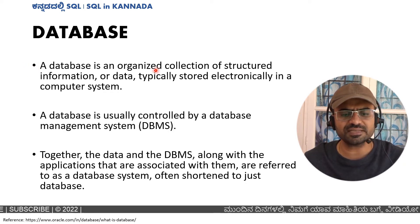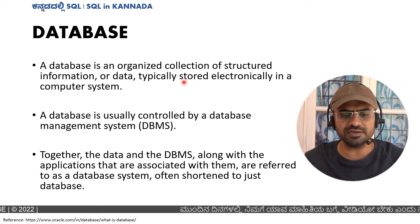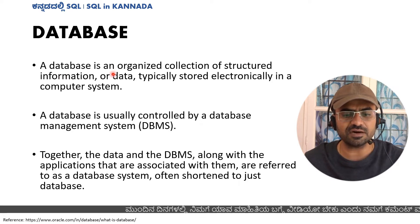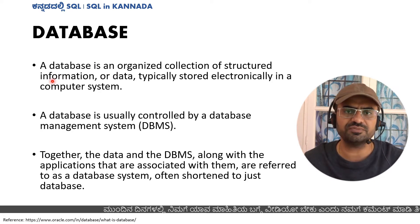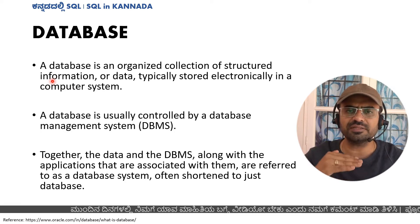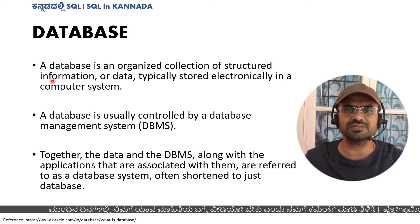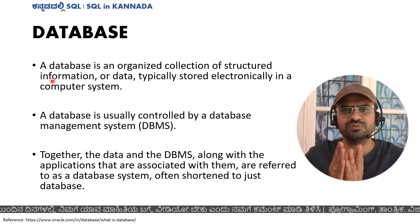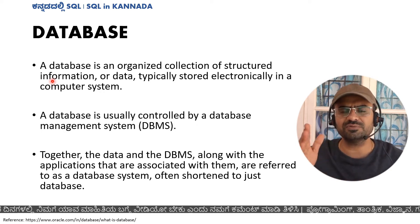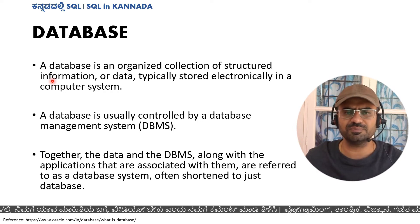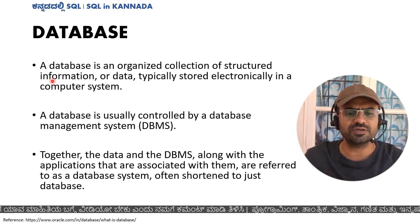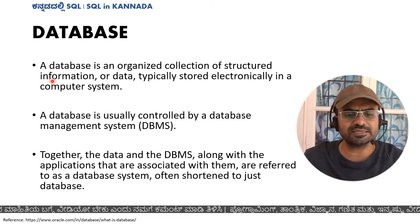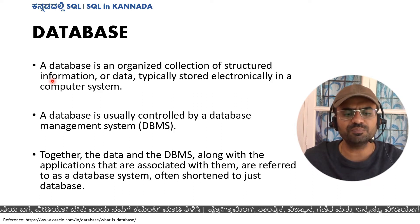The database is an organized collection of structured information or data, typically stored electronically in a computer system. Structured information uses proper rows and columns. For example, one particular column is number, second column is first name, last name, email ID, phone number. This is structured data, and it is electronically stored in the computer system.